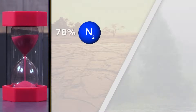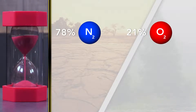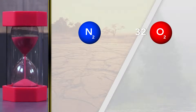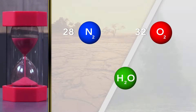Now let's apply that to the Earth's atmosphere. Our atmosphere is 78 percent nitrogen and 21 percent oxygen. The remaining one percent is made up of trace gases. The molecular weight of an oxygen molecule is 32 and the molecular weight of a nitrogen molecule is 28. Now here's the kicker — the molecular weight of water, H₂O, is 18. It's measurably less dense than either oxygen or nitrogen.